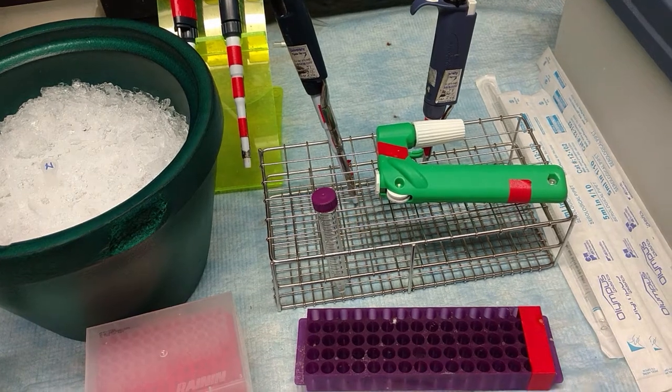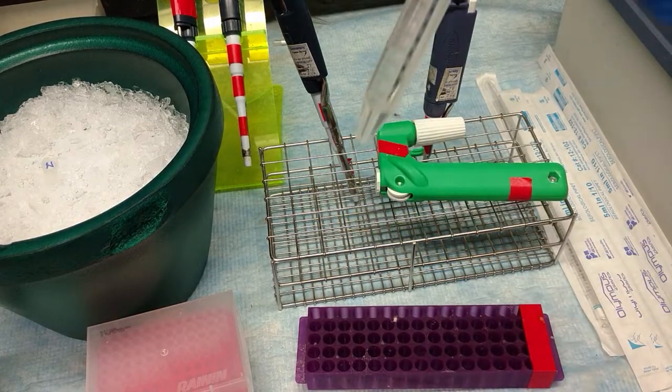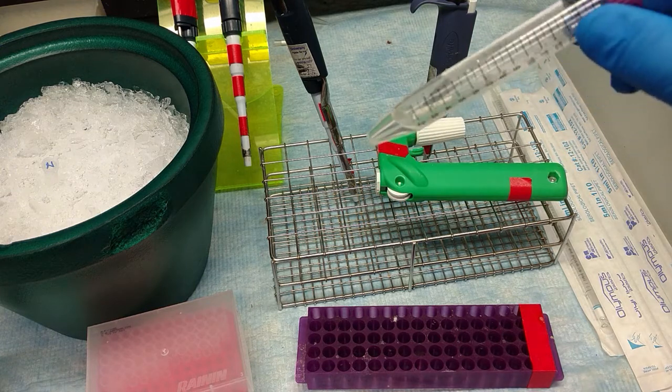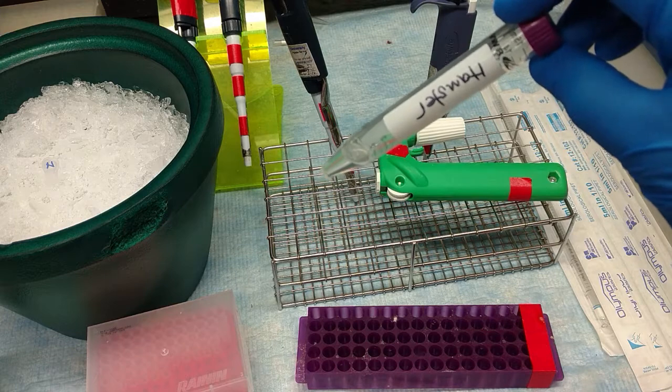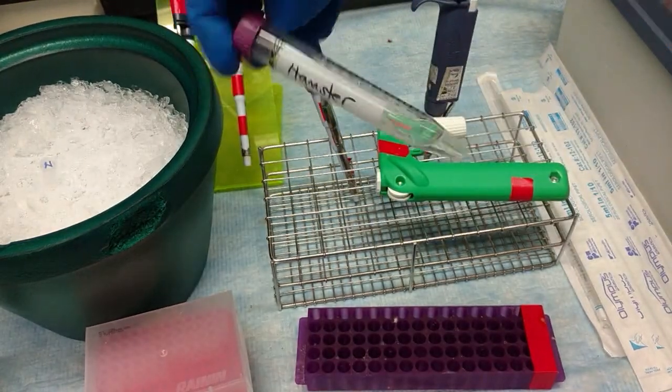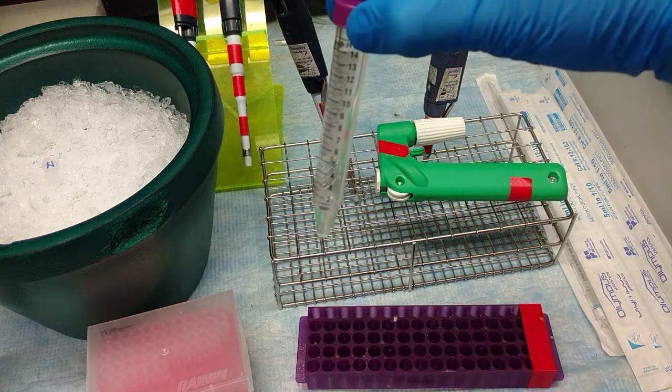What you're going to do to start this procedure is you're going to take a mil of your lysate. You're going to want lysate that's in the 10 to the 9th or higher concentration. You're going to transfer it into a 15 mil tube. Here we have lysate from a hamster.